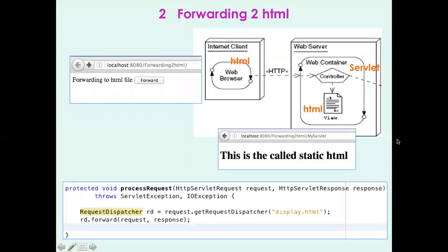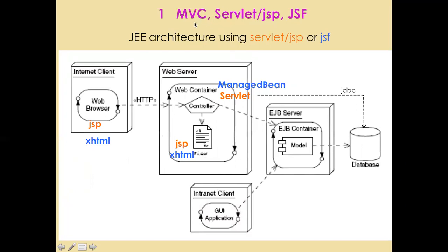Now I will explain how MVC is implemented using the JSP architecture. In the first part we will see it with servlets and JSPs, and later using JSF. The web browser starts with a JSP — or it could start from HTML — then sends an HTTP request, and the Controller is a servlet. This servlet accesses the database using either JDBC or the EJB server. After making computations, the servlet sends the result to the JSP, which returns the HTTP response to the browser.